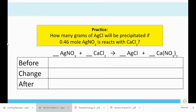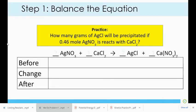How many grams of silver chloride will be precipitated if 0.46 moles of silver nitrate is reacted with calcium chloride? First thing we need to do is balance the chemical equation. This is to make sure that we have the same number and kinds of atoms on both sides of the chemical equation.